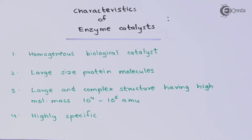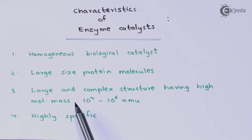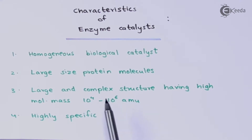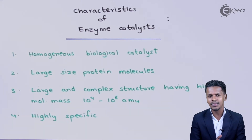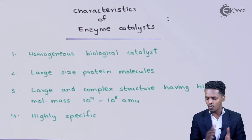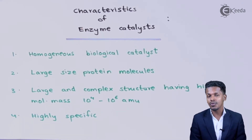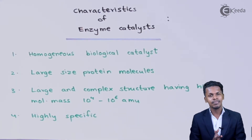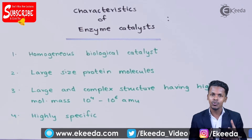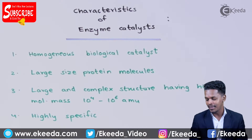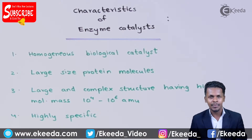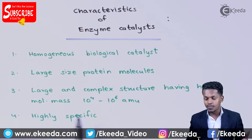The next point is that enzymes are large and complex structures having a high molecular mass ranging from 10^4 to 10^6 AMU (atomic mass units). Because enzymes are proteins with a very complex structure, they can attract other substrates or reactants to attach to them, allowing various biological reactions to occur. The next characteristic is that they are highly specific in nature.